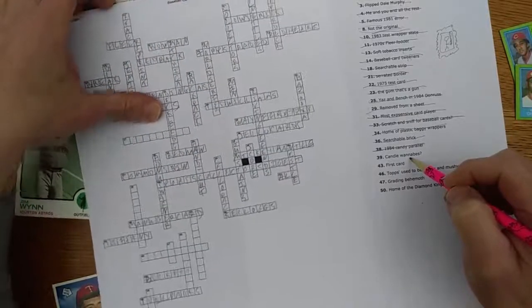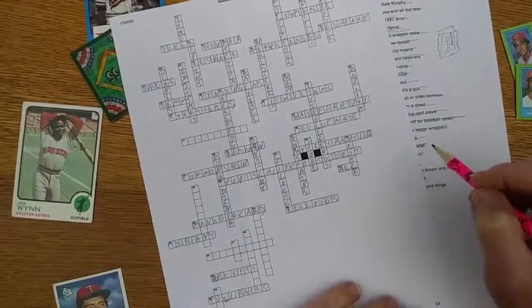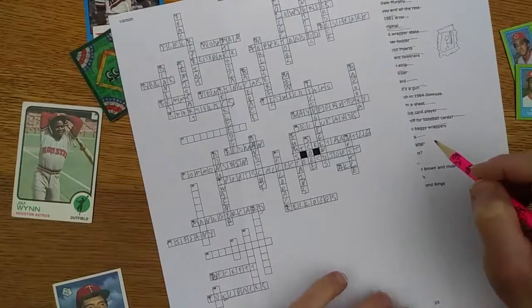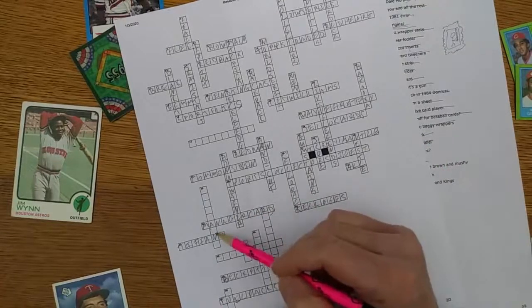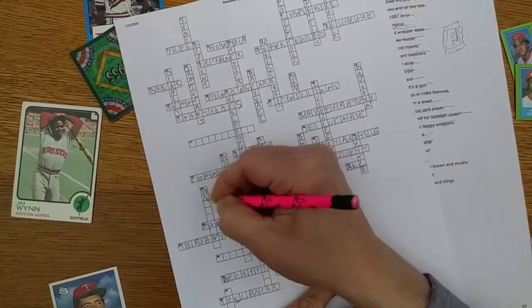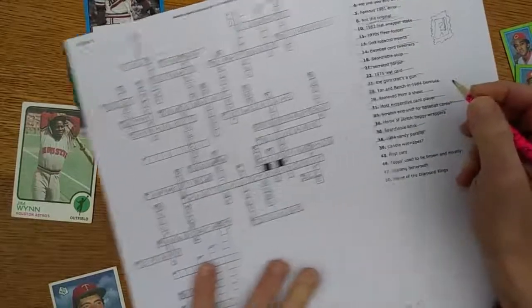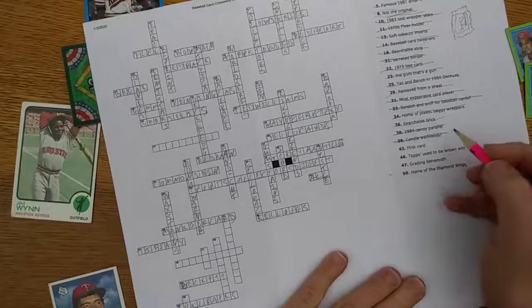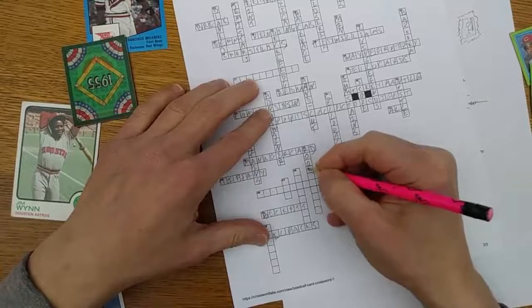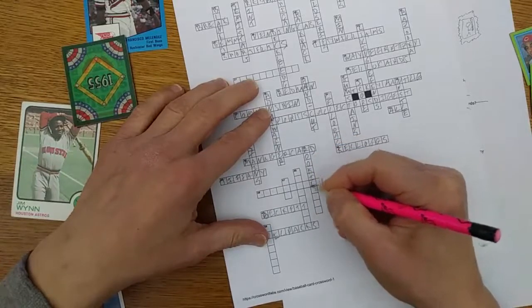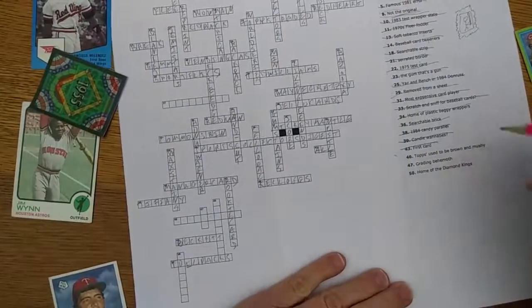Candle wannabes, 39 down. That must be wax something or other. It's got to be something small with wax. I've seen this pattern before. Stains. Wax stains, similar to gum. Oh, so witty. Candle wannabes. First card, 43 down: That's got to be rookie card. Any self-respecting hobbyist knows that.